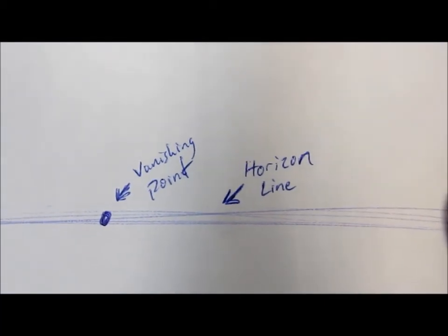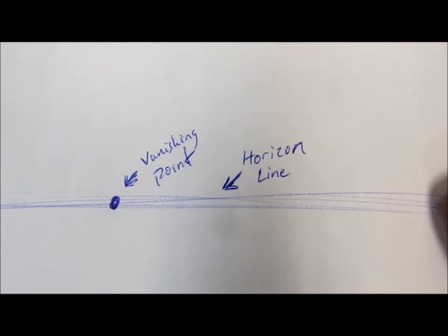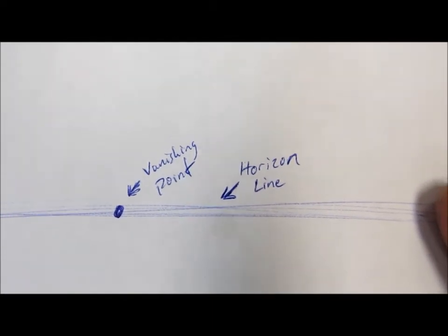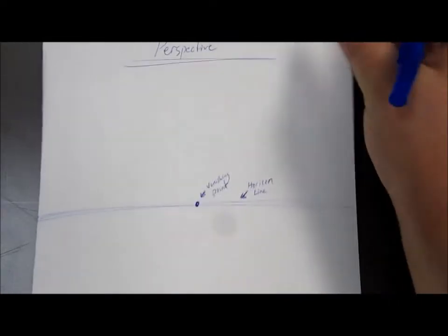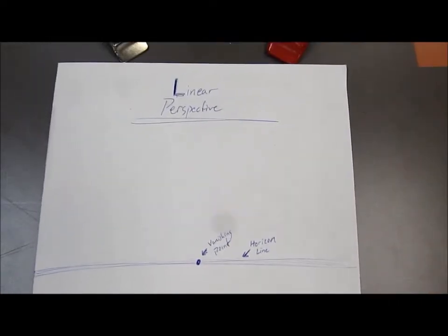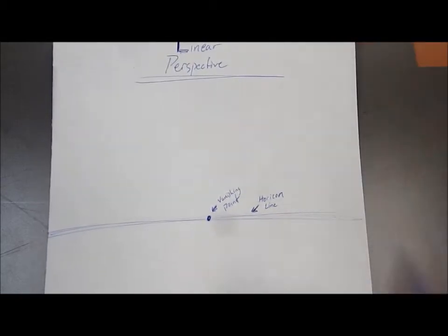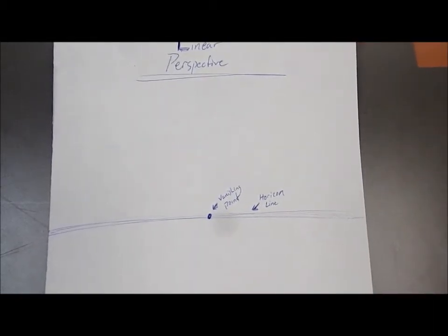Now the horizon line is where the sky touches the ground. Alright, if you're standing outside out at the beach, looking out at the ocean, the horizon line is the imaginary line or the line that visibly you can see. That is where the ocean is touching the sky out in the extreme distance.